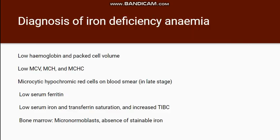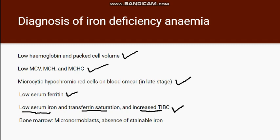To make a diagnosis of iron deficiency anemia, we require: hemoglobin is low, the indices are low, RDW is high, there is microcytosis and hypochromia on the blood smear, low serum ferritin level, low serum iron level, transferrin saturation is low, and TIBC is increased because the capacity to bind iron is present. On bone marrow, we will find micronormoblasts with defective hemoglobinization and absence of stainable iron on the Pearl Prussian blue stain.